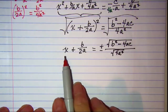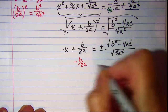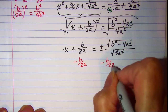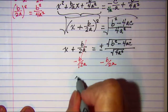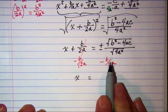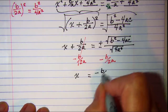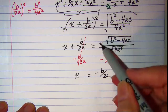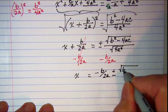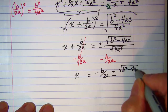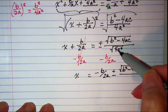Now I want x by itself, so I'm going to subtract b over 2a from both sides and these will cancel. So on the left side I have x equals, and on the right side I have negative b over 2a plus or minus the fraction with numerator square root of b squared minus 4ac, and in the bottom the square root of 4a squared is 2a.